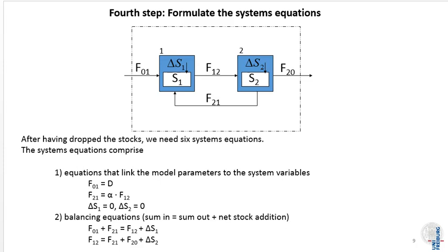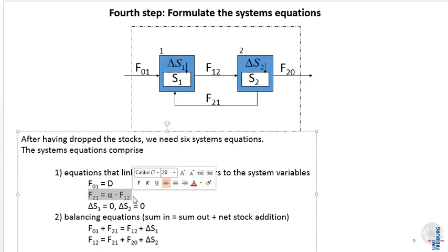In the fourth step of our manual system solution, we formulate the systems equations. We have two types of systems equations. The first are equations that link the model parameters to the system variables. For example, the flow from zero to one, the incoming flow, equals D. The other equation is the definition equation of the recycling rate alpha. We have the two equations for the stock changes that we don't consider, and we have the mass balancing equations. That is five equations in total.